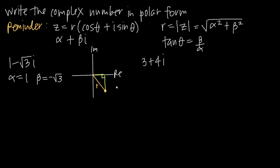We also use tangent of theta to find the angle between the plotted point and the real axis: tangent of theta equals beta divided by alpha, or b over a. Once we have r and theta, we plug them into the formula for z. It's helpful to plot the number in the Argand plane because this tells us which quadrant of the unit circle to look in. Since our point has a positive real part and a negative imaginary part, it's in the fourth quadrant.